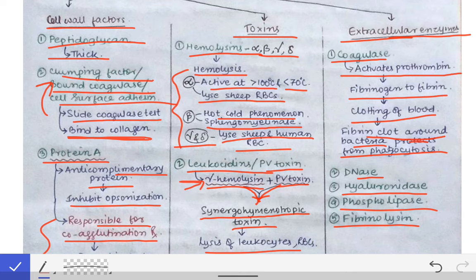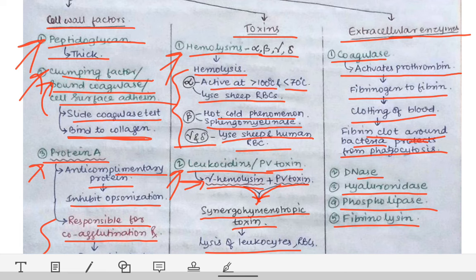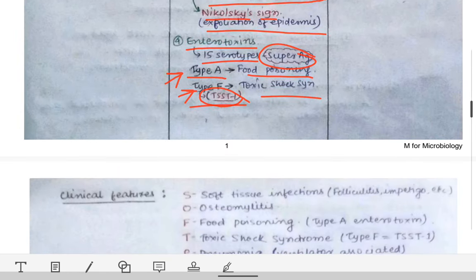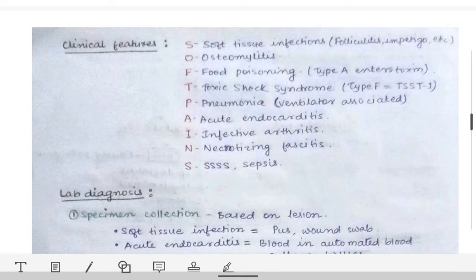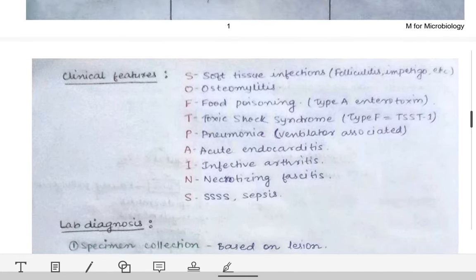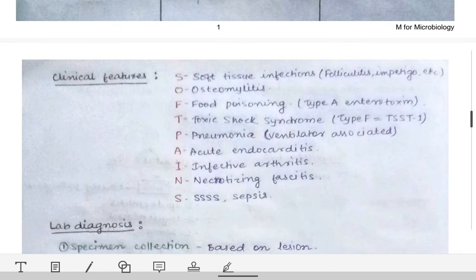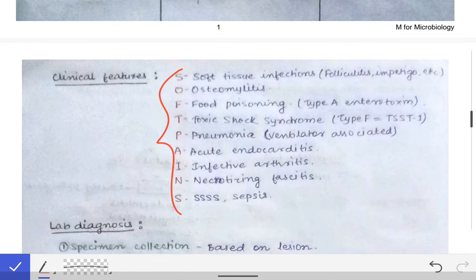When answering questions about virulence factors of S. aureus, classify them under headings — cell wall factors, toxins, and extracellular enzymes — and answer under each heading. That will fetch better marks. Now we will move to the different infections caused by Staphylococcus aureus, which can be remembered by the mnemonic 'SOFT VEINS.'